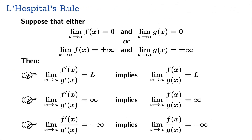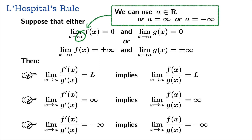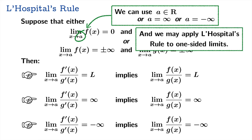Let's revisit L'Hôpital's rule to note a couple of useful extensions. As x approaches a, you can use a real number, or substitute infinity or negative infinity. So you can apply L'Hôpital's rule in the context of finding horizontal asymptotes. Also, we may apply L'Hôpital's rule to one-sided limits — nothing stops us from using it as we approach the argument from just one side.